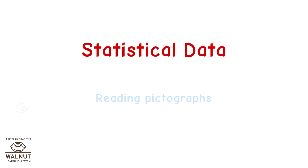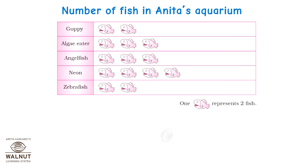Statistical data reading — pictographs. Sometimes information is given in pictures in a table; they are called pictographs. Let us learn how to read these pictographs. This pictograph shows the number of fish in Anita's aquarium. There are five varieties of fish. One symbol of fish in the table represents two fish in the aquarium.